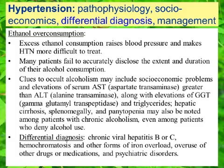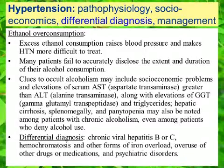In patients with liver disease suspected of alcoholism, we also want to consider chronic viral hepatitis B or C, hemochromatosis and other forms of iron overload, overuse of other drugs and medications, and of course psychiatric disorders in the differential diagnosis of any addiction and dependency disorder.